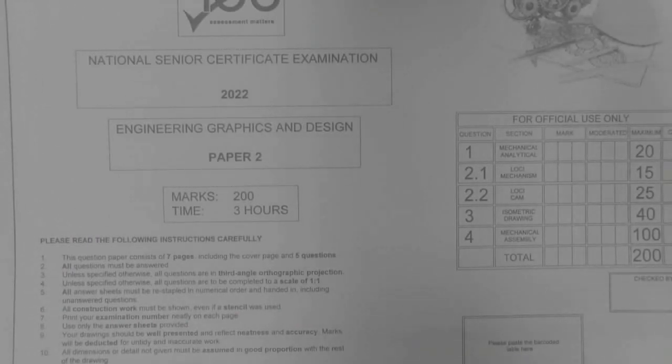Hello Grade 12s. Today I'm working through an example of a past IEB paper 2. I'm going to be working on question 2, the locus and the mechanism. Mark allocation is 15 and we will try and complete this in the 15 minutes so that we can finish the cam and the locus within a 40 minute time frame.